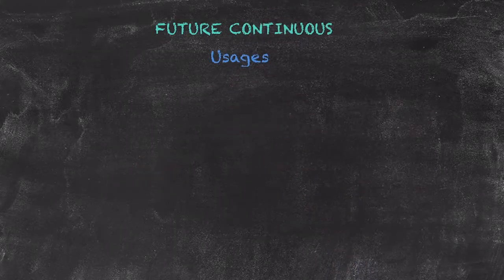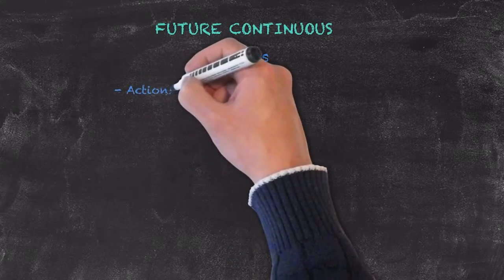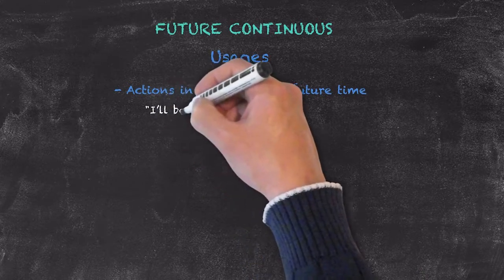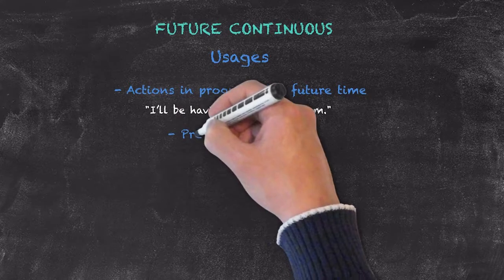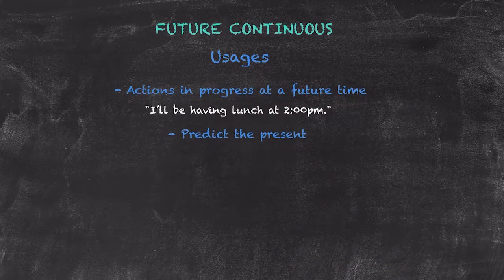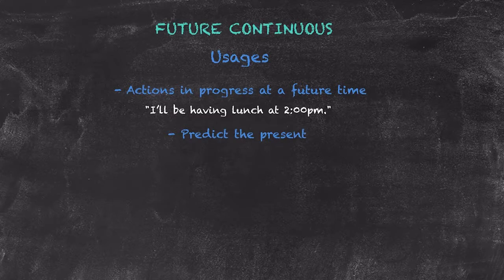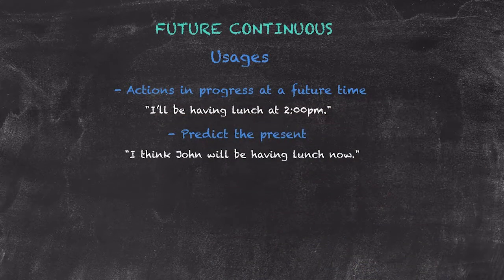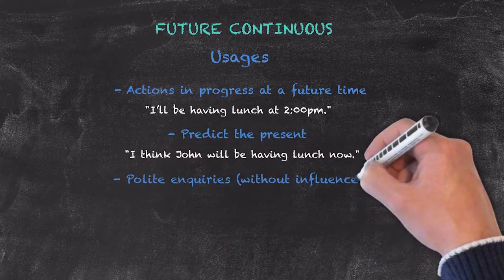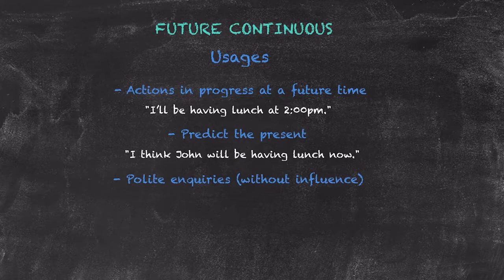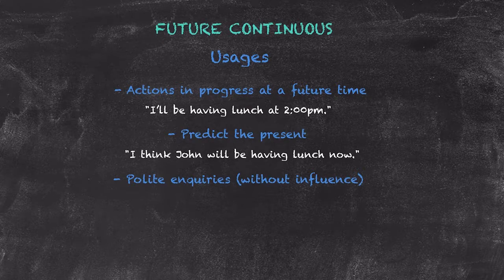Common usages for the future continuous include: actions in progress at a future time, such as 'I'll be having lunch at 2 p.m.' We can also use it to predict the present — for example, if asked about John's whereabouts, you might say 'I think John will be having lunch now.' It's also used for polite inquiries where we don't want to influence the outcome, such as 'Will you be coming to the party?'